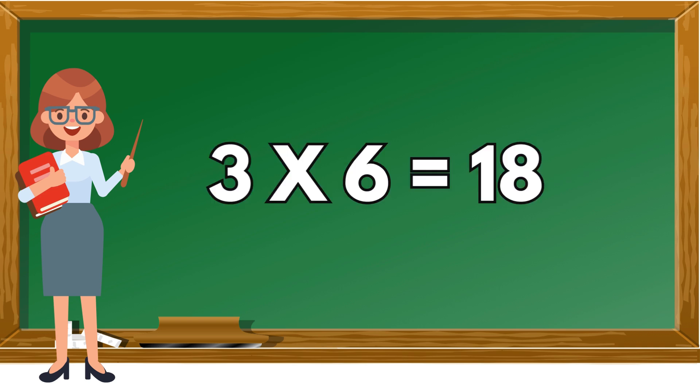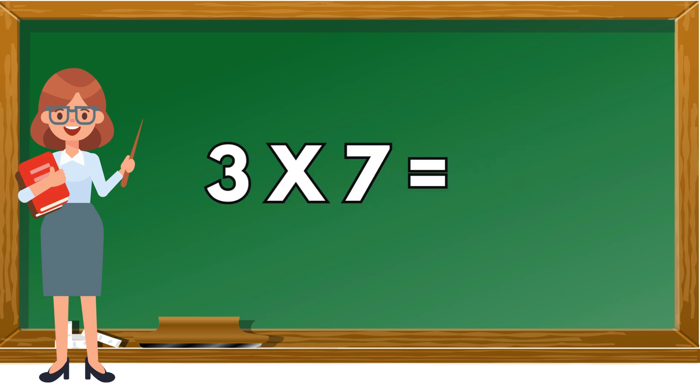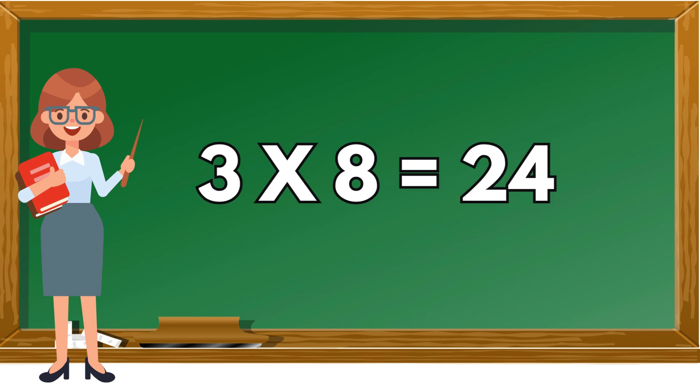Three sixes are eighteen. Three sevens are twenty-one. Three sevens are twenty-one. Three eights are twenty-four. Three eights are twenty-four.